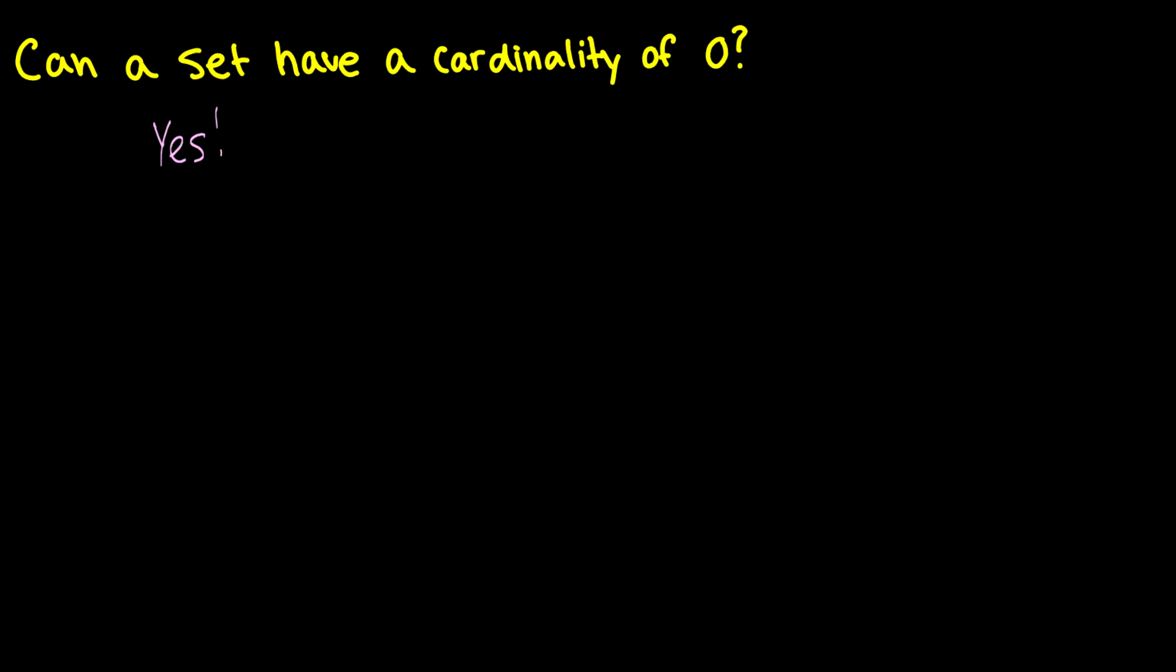And there's exactly one set that has a cardinality of 0, and that is the empty set. This is what the empty set is denoted as. This is the same thing as having two brackets with nothing in it.